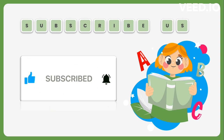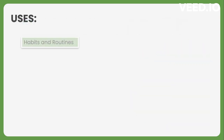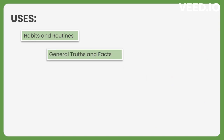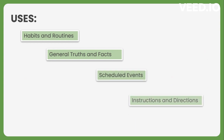Okay! First of all, we will take a look at the uses of simple present tense. We use simple present tense to describe habits and routines, to describe general truths and facts, to describe scheduled events, to describe instructions and directions, and so on. We will discuss them one by one.